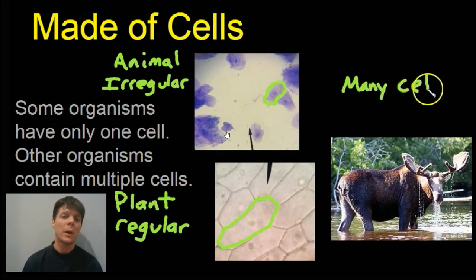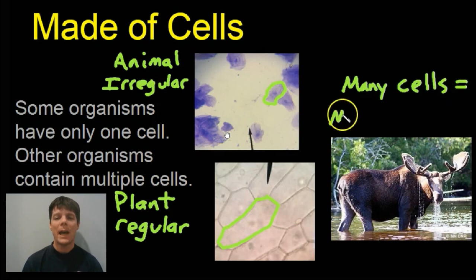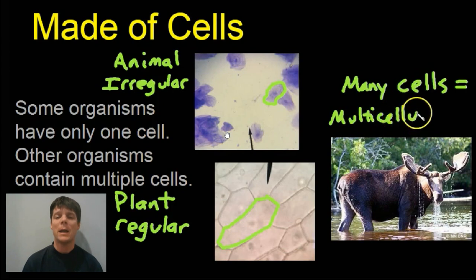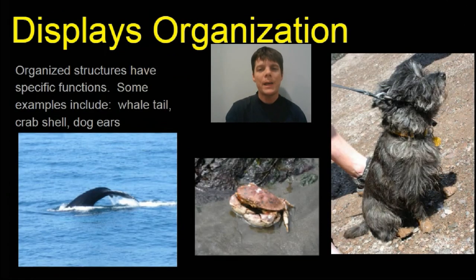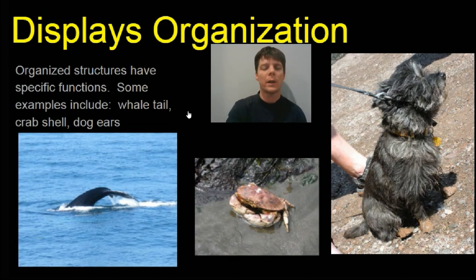The last example on this slide is a moose. A moose is an organism that has many cells, so we would call this a multicellular organism. We have other organisms like bacteria or protists which contain only a single cell. Another key characteristic of living organisms is that they display organization — this means they have structures which perform specific functions for that organism.